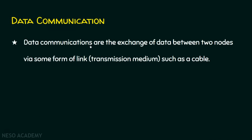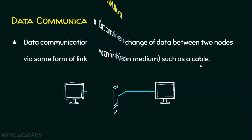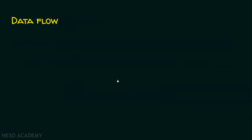Data communications are the exchange of data between two nodes. If there are two nodes, they are going to exchange data via some form of link or transmission medium. In this case, the transmission medium is the cable. It means two nodes are going to exchange data.